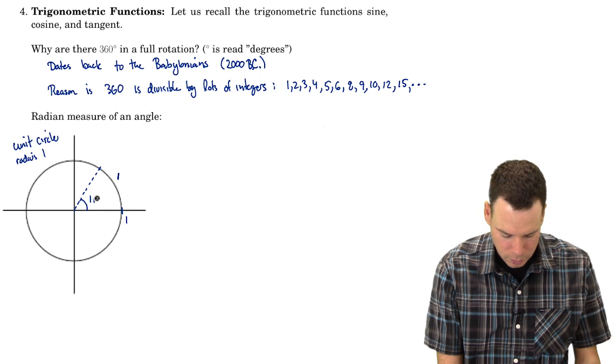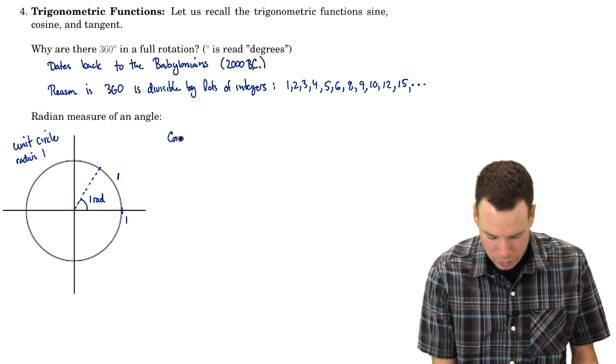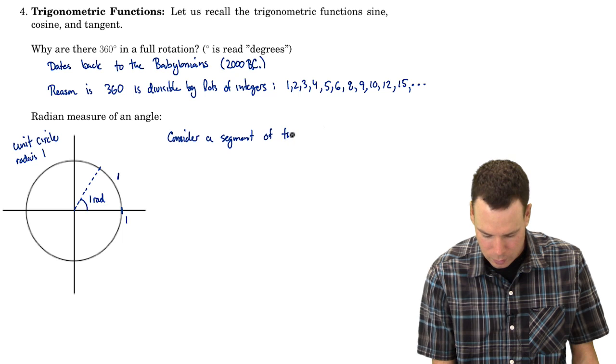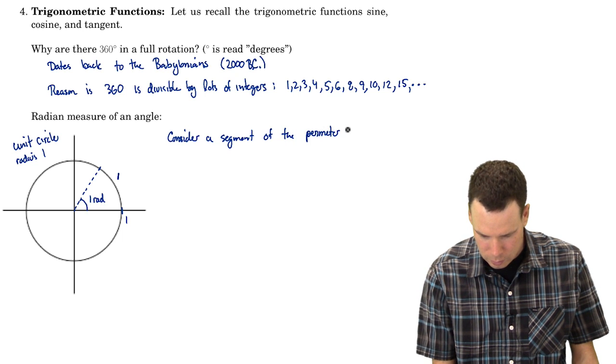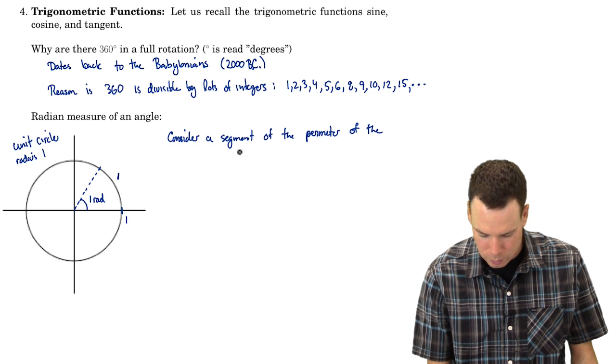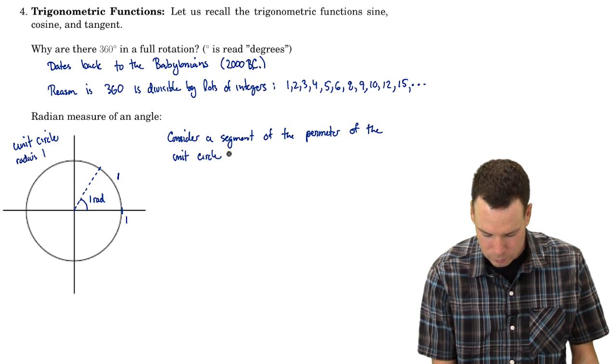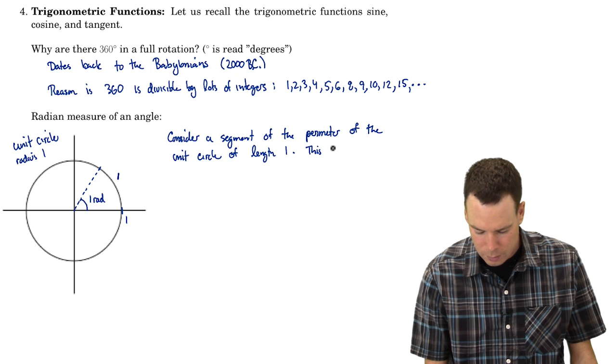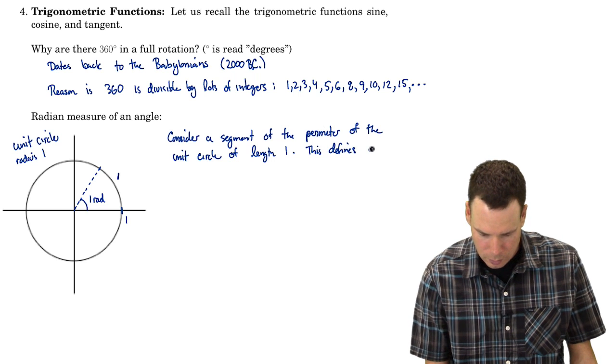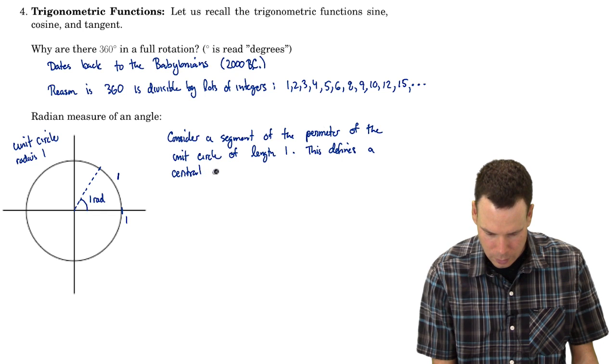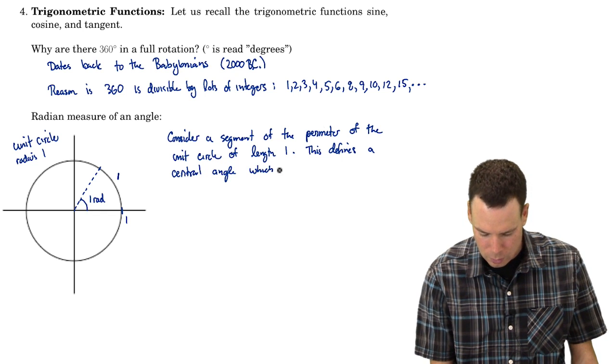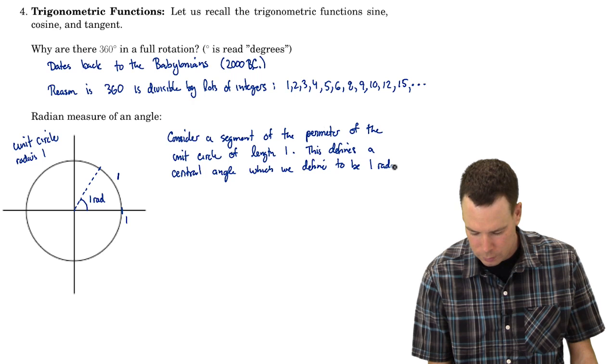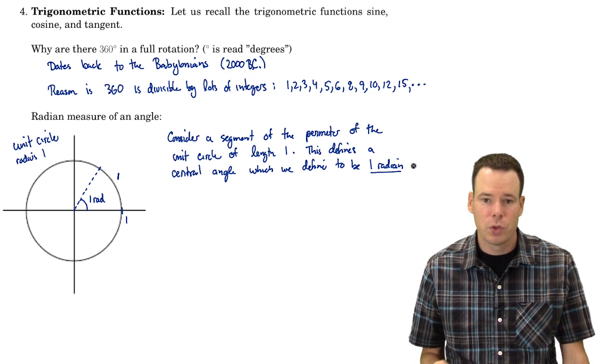So this is 1 radian. So let's jot this down. What did we do? We consider a segment of the perimeter of the unit circle of length 1. This defines a central angle which we define to be 1 radian. So that's the definition of a radian.